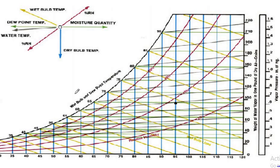We'll also cover percentage of relative humidity and enthalpy of a given point. On the chart, this axis is the humidity ratio, this is dry bulb temperature, and this is wet bulb and dew point temperature. Enthalpy lines run parallel to the wet bulb temperature lines, shown in yellow.